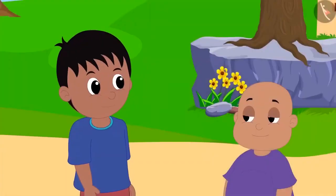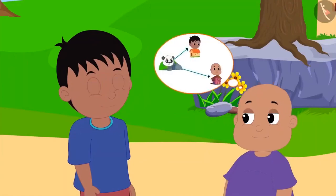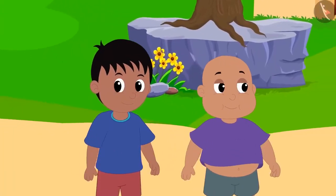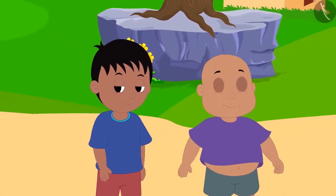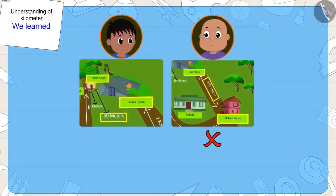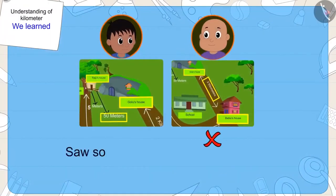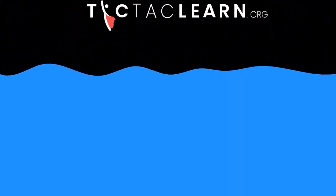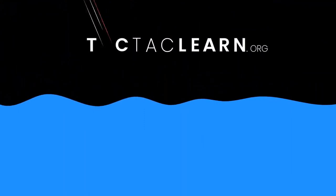Even though two is less than fifty, because meter is smaller than kilometer, Raju's house is actually closer to Golu's house. Bablu finally understood, and both of them went to play at Chanda's house. Kids, in this video we saw some common mistakes related to measuring distances in kilometers.